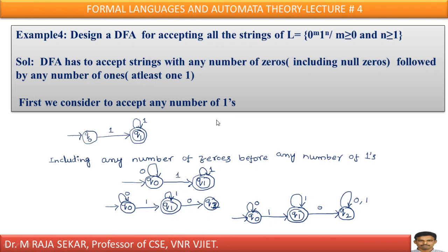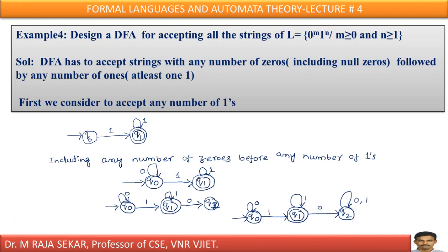Design a DFA for accepting strings L = 0^M 1^N where M ≥ 0 and N ≥ 1. M ≥ 0 means there may be 0, 1, 2, 3, or infinitely many zeros. N ≥ 1 means there may be 1, 2, 3, or infinitely many ones. Let Q0 be the initial state. Since zeros may or may not be present, Q0 on 1 must accept — for example, when M = 0 and N = 1, there are no zeros and one 1. After getting any number of ones, it must accept, so we keep a self-loop. Since it may start with zeros, we keep a self-loop on Q0 for input 0.